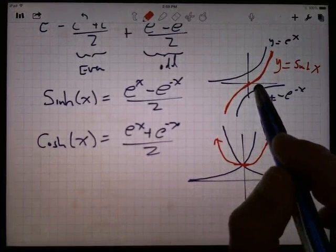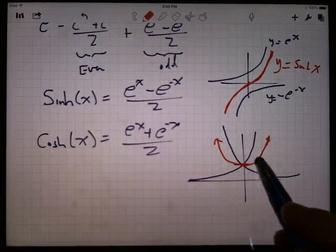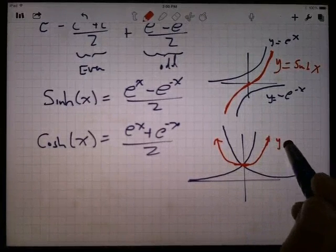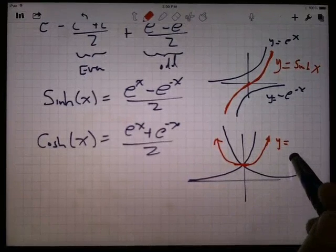Notice that this one is symmetric about the origin. It's an odd function. Hyperbolic cosine here is symmetric about the y-axis. It's an even function.